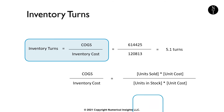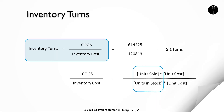You may be wondering why I use accounting information for this formula instead of just canceling out the cost per unit and calculating turns as the number of units sold over the number of units in stock. That's because the unit cost of an item can change throughout the year as pricing changes with your suppliers.